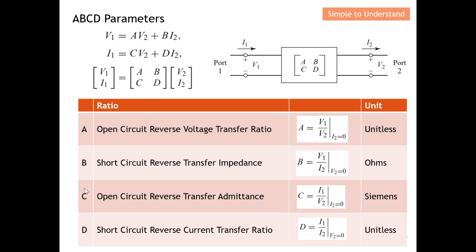C is known as the open-circuit reverse transfer admittance. To achieve C, I need to let I2 equal zero by performing an open circuit at the output. With I2 equal to zero, I can find the value of C, which is I1 over V2. The unit is the reverse function of ohms, which is also known as Siemens — current over voltage. So C is the open-circuit reverse transfer admittance.